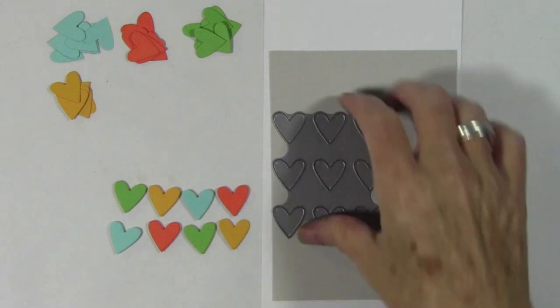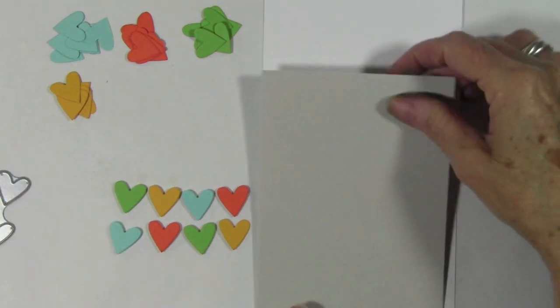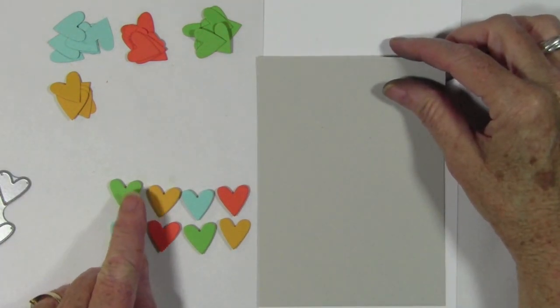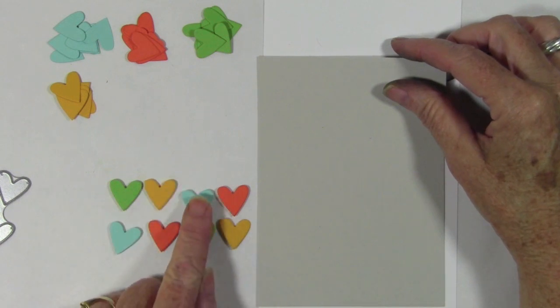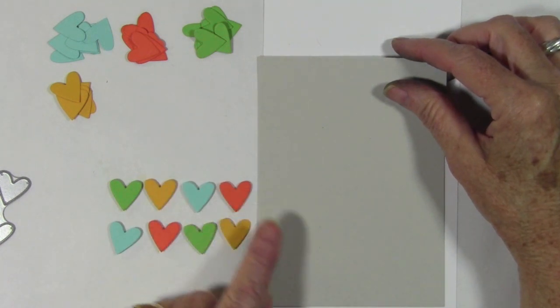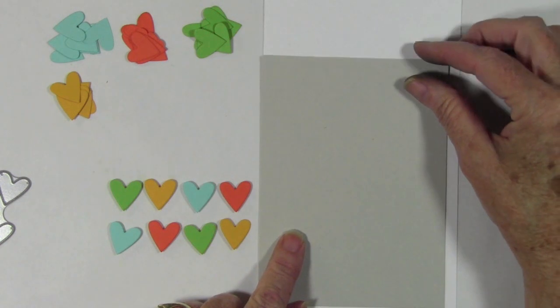This is a really easy card to make with a little bit of assembly, so I have cut some cardstocks and I'm using Green Apple, Sunshine, Sea Glass and Orange Peel, and then I have a panel of Fog cardstock.